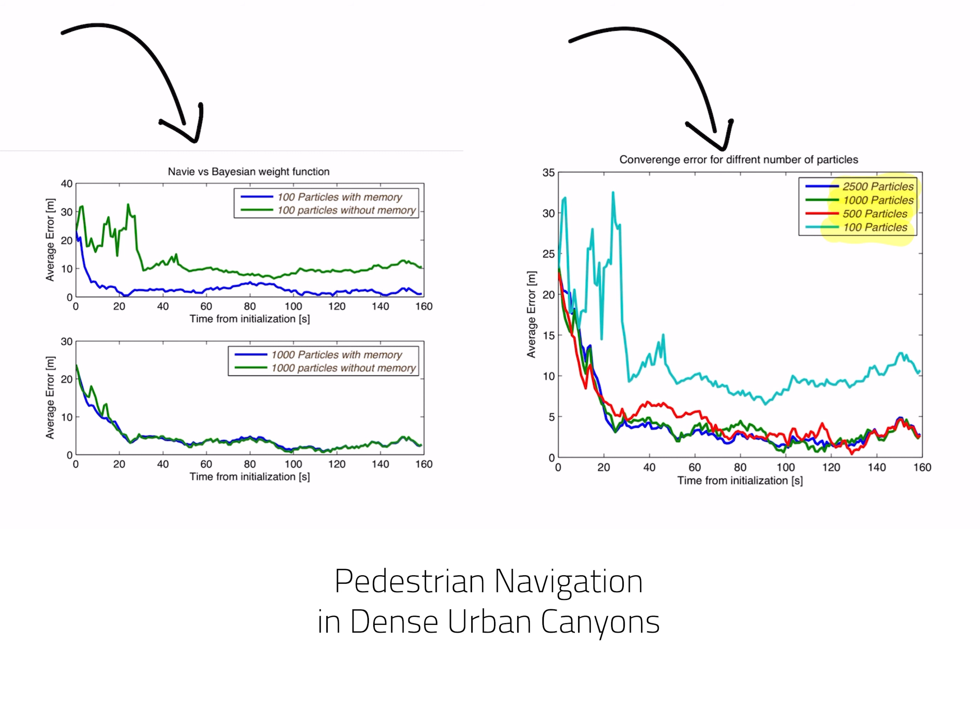So in the bottom graph we can see 10,000 particles with memory—this is a Bayesian approach that I've already explained—and in green we have 10,000 particles without memory, this is the naive approach. You can see that there is absolutely no difference whatsoever between those two. Why? Because when you have sufficient amount of particles, it doesn't matter. The particles themselves can describe the hidden function. But when I have only 100 particles, there